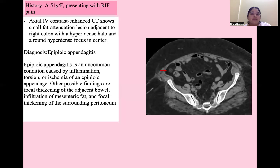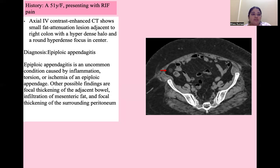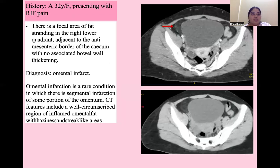Next is a case of a 51-year-old presenting with right iliac fossa pain. CT shows a small fat attenuation area adjacent to the right colon with a hyperdense halo and a round hyperdense focus in the center — suggestive of epiploic appendicitis. It is an uncommon condition caused by inflammation, torsion, and ischemia of the epiploic appendage. Other possible findings include focal thickening of the adjacent bowel, infiltration of mesenteric fat, and focal thickening of the surrounding peritoneum.